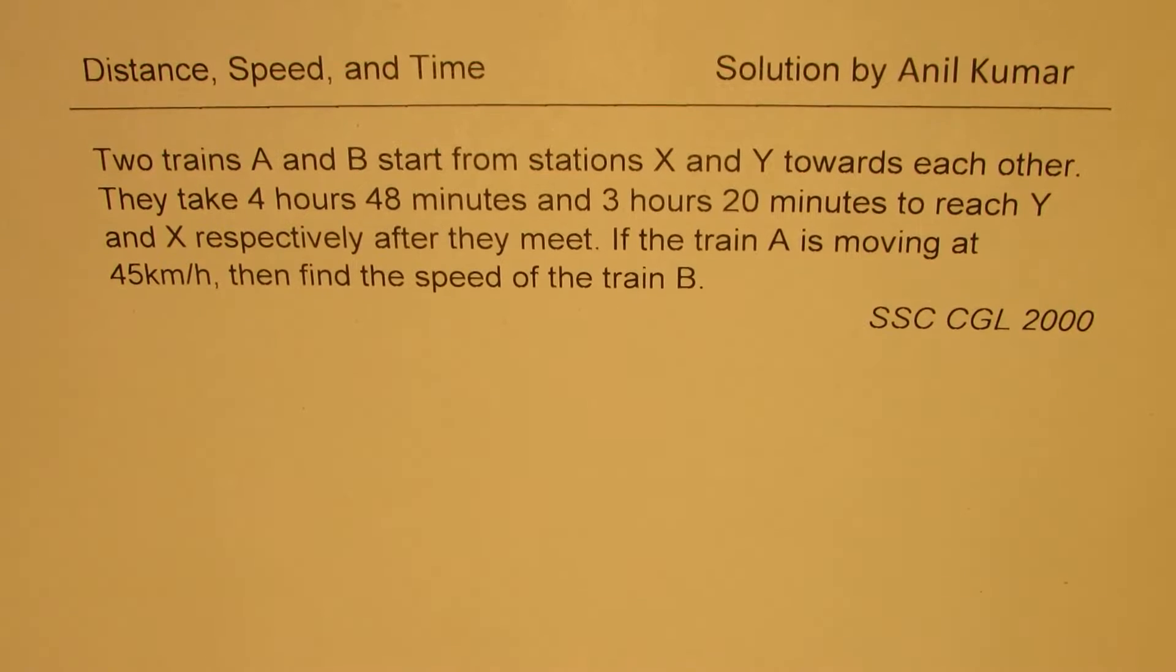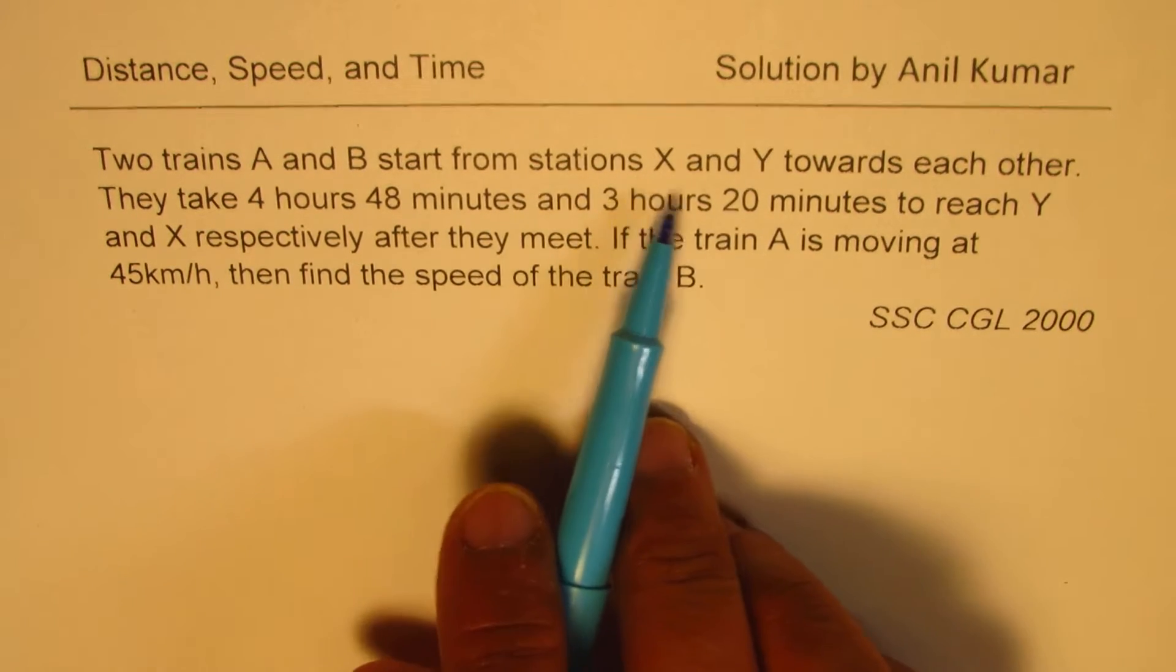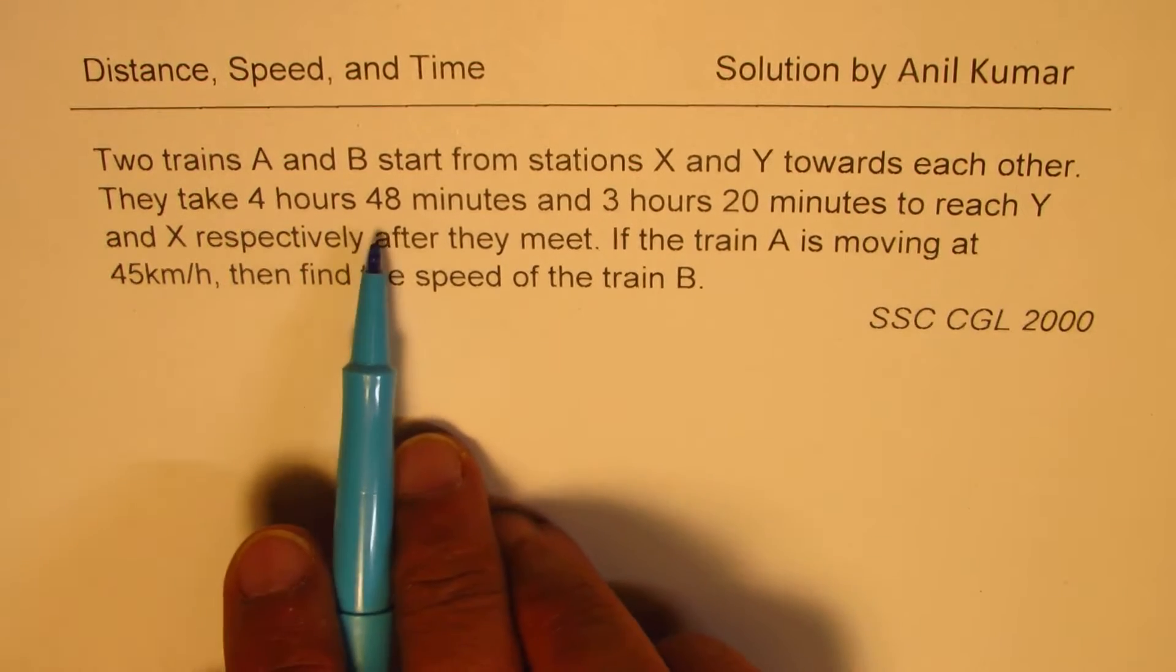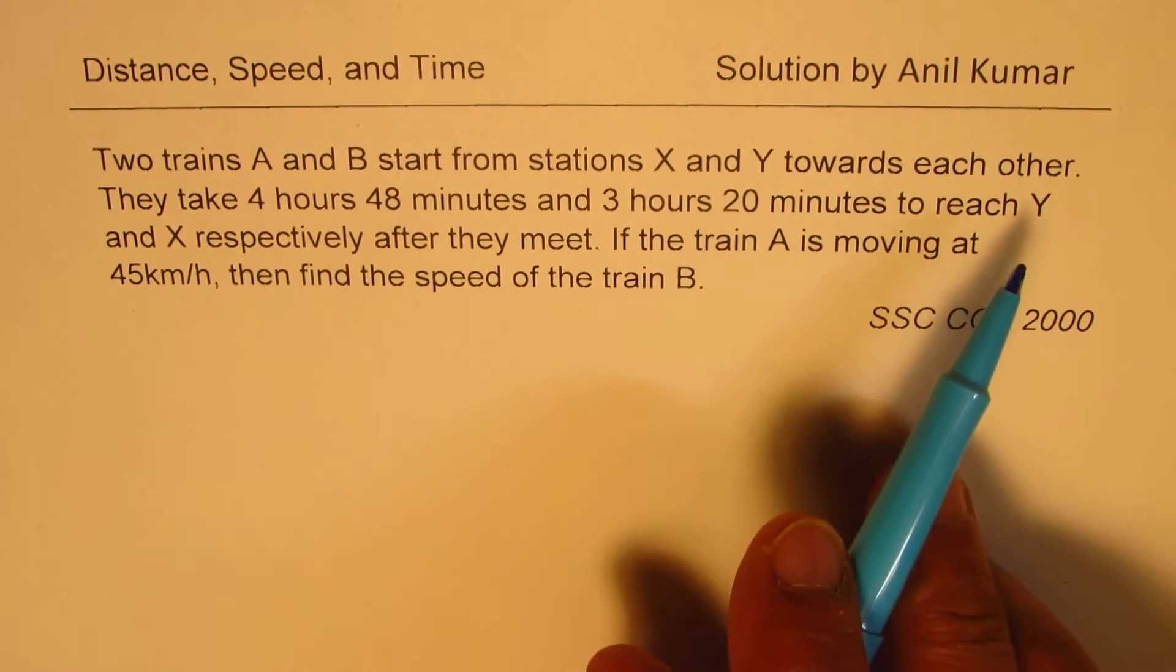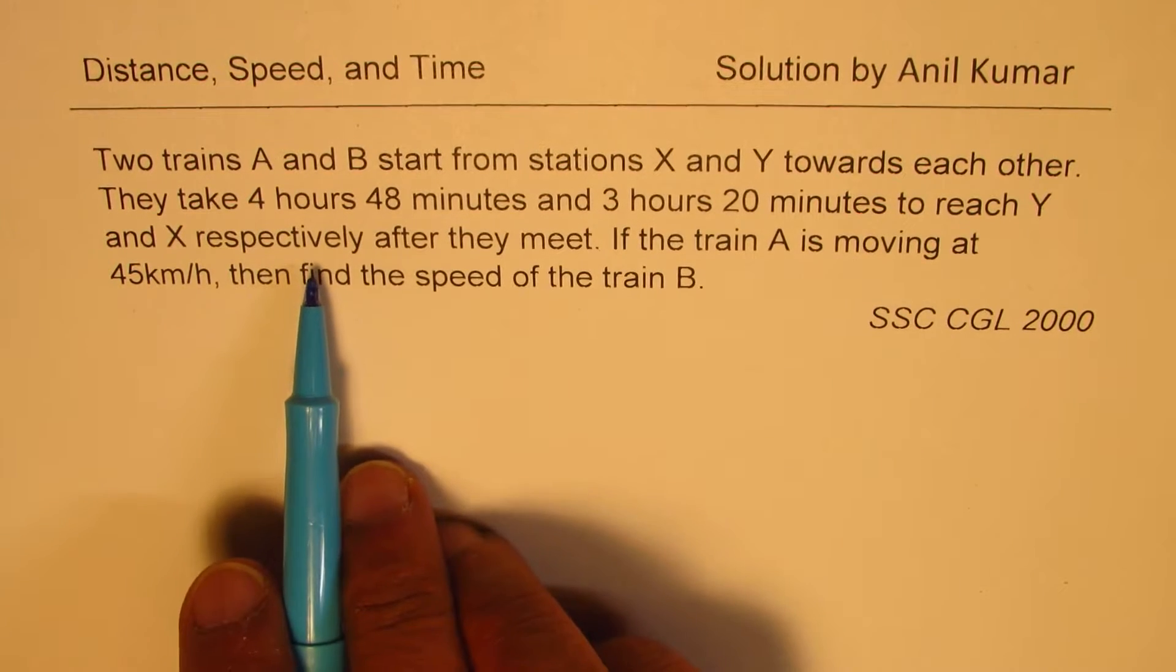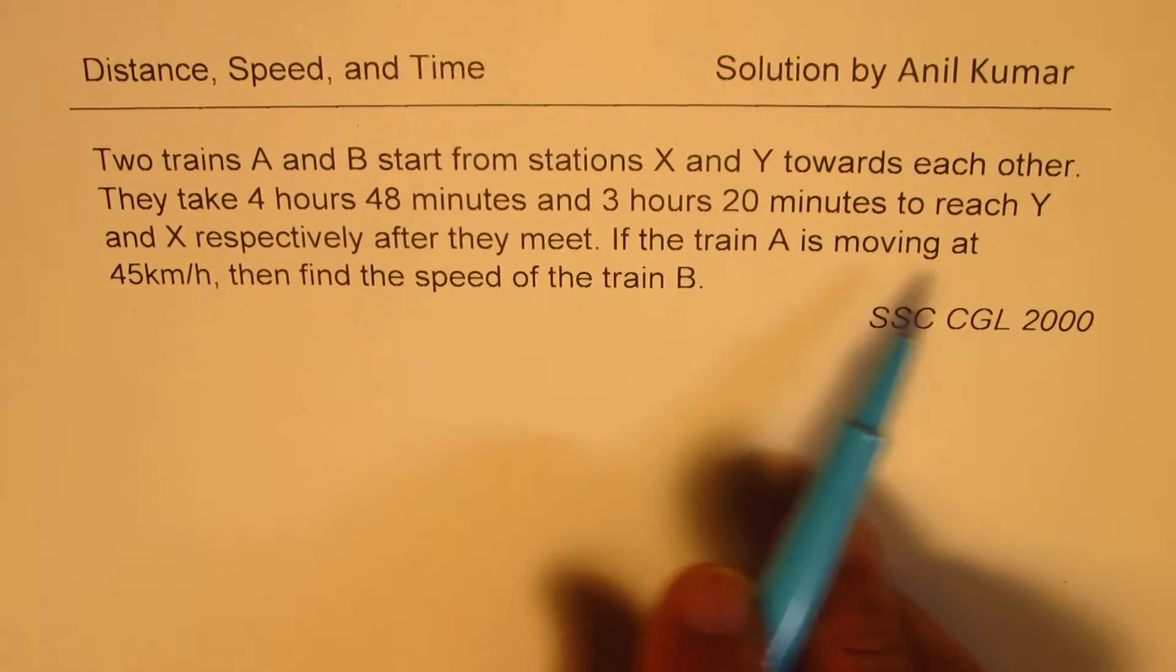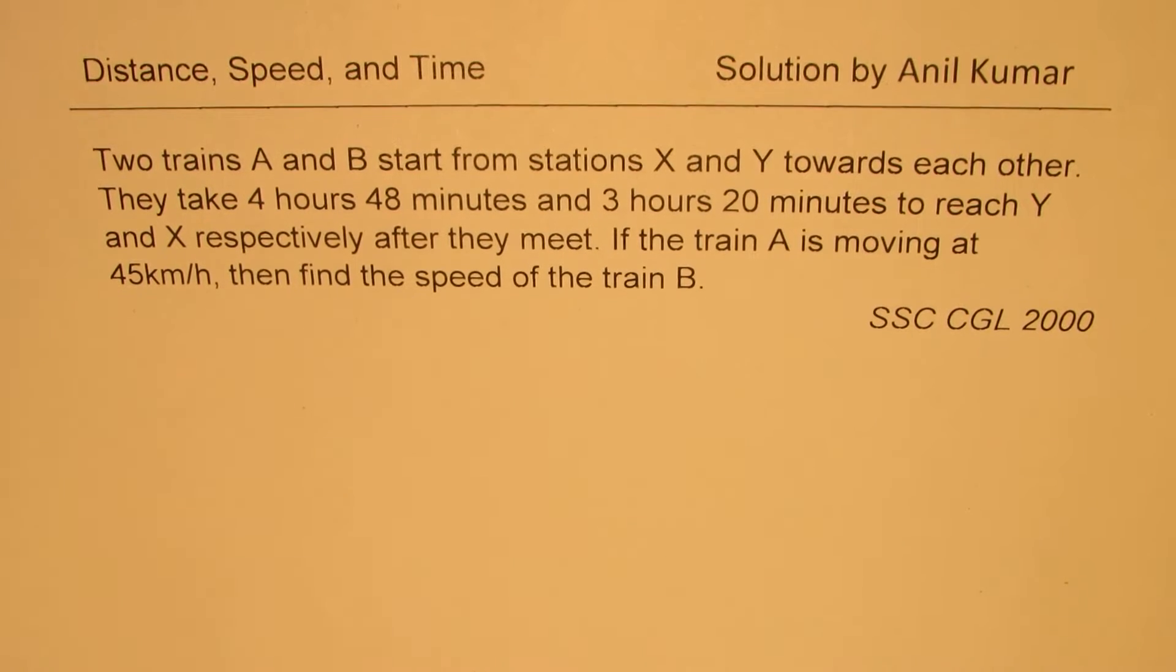The question is: Two trains A and B start from stations X and Y towards each other. They take 4 hours 48 minutes and 3 hours 20 minutes to reach Y and X respectively after they meet. If train A is moving at 45 kilometers per hour, then find the speed of train B.